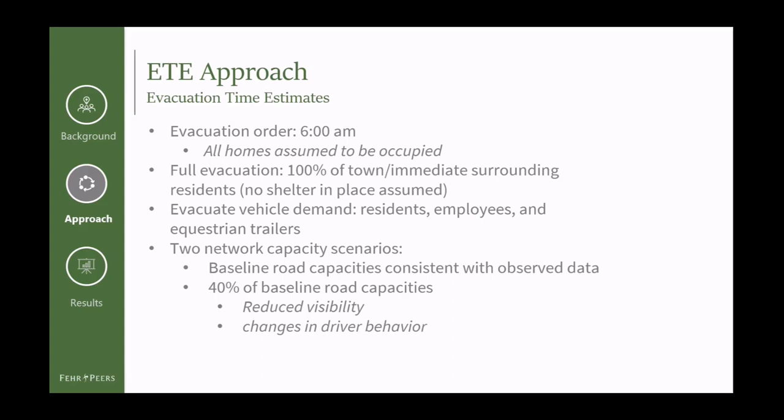For our study, we looked at a four-hour AM early morning evacuation and assumed no shelter-in-place or local shelters, meaning everyone in the mostly residential area is evacuating — a pretty conservative analysis. We looked at vehicle demand for three population groups: residents, employees, and equestrian trailer trips. We also looked at two network capacity scenarios: baseline road capacity and 40% reduced roadway capacity, which represents changes in driver behavior and reduced visibility due to the wildfire.